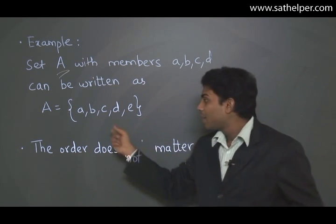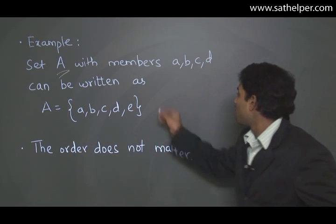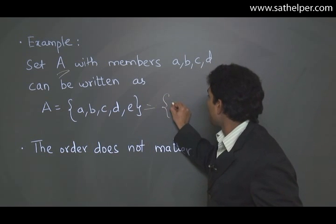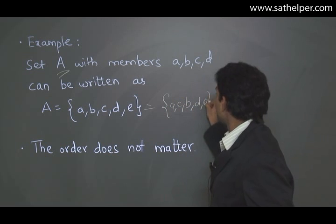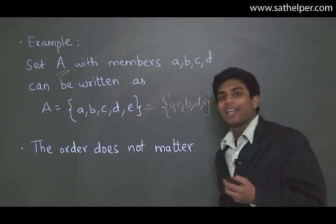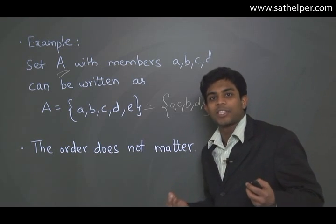Remember that in sets, the order does not matter. This means {a, b, c, d} is the same as {a, c, b, d}. The order does not matter when you define a set. A set is just a collection - not an ordered collection, but simply a collection of objects.